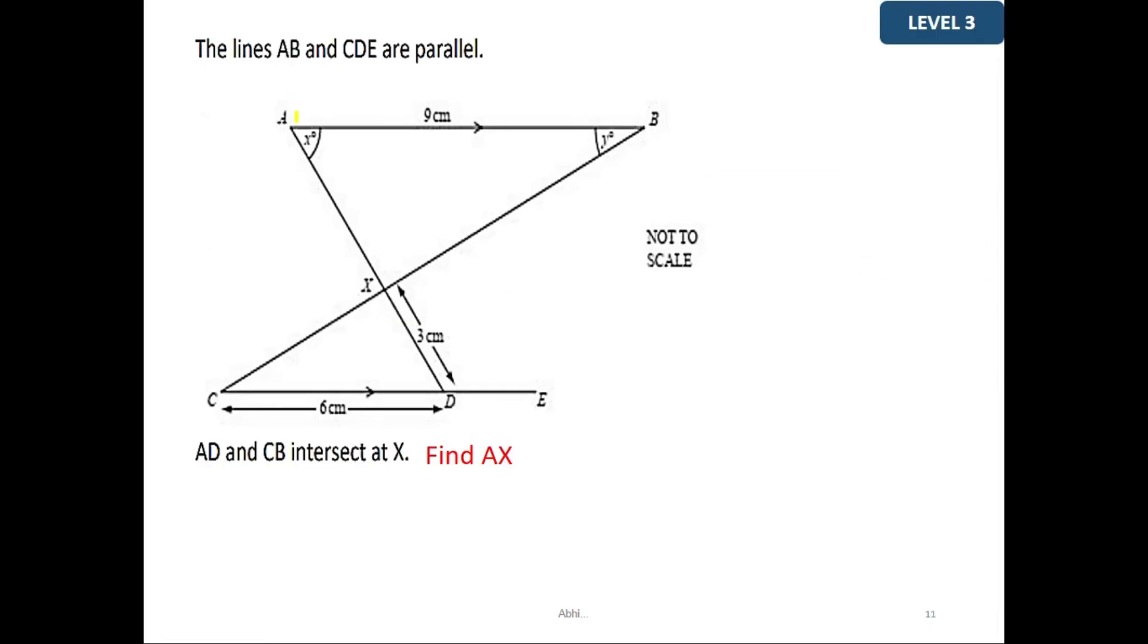Question 3: The lines AB and CDE are parallel. The triangles AD and CB intersect at X. So we have two triangles being formed. The question is to find what is the length of AX.